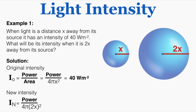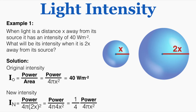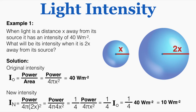The new intensity equals that same power divided by 4π times (2x)², because we're asking for the intensity at 2x from the source. Squaring 2x gives 4x². Isolating the original equation within the new one, I see the new intensity equals one-fourth times the original equation — one-fourth times 40 watts per meter squared — which equals 10 watts per meter squared. So at 2x distance from the source, the intensity is 10 watts per meter squared.